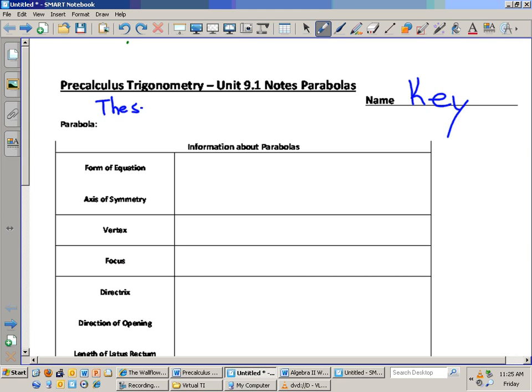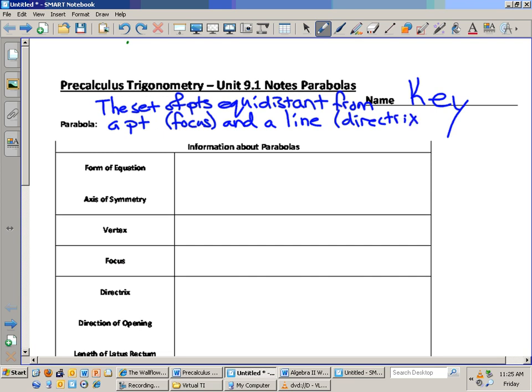The set of points equidistant from a point called the focus and a line called the directrix. So that's actually the definition of a parabola. Set of points equidistant from a point referred to as the focus and a line called the directrix. And I'll show you how they can actually generate that type of graph here in a second. I'm going to give you just a chance to write it down and then we'll move on.